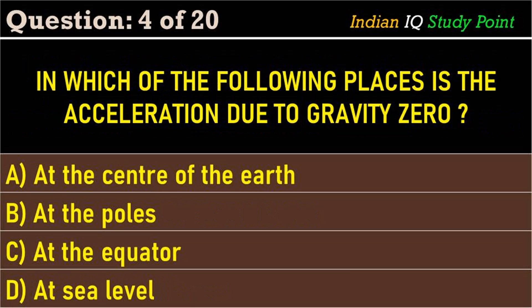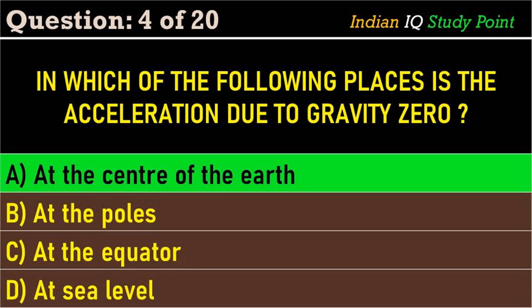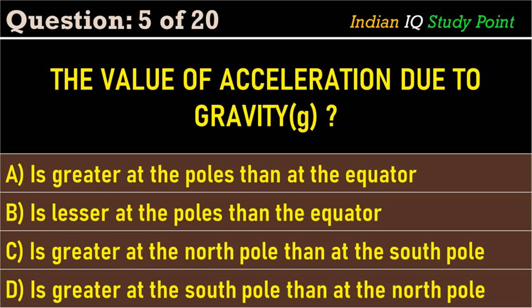Coming to the next question: in which of the following places is the acceleration due to gravity zero? Option A: at the center of the earth. Option B: at the poles. Option C: at the equator. Option D: at sea level. The correct answer is option A: at the center of the earth.